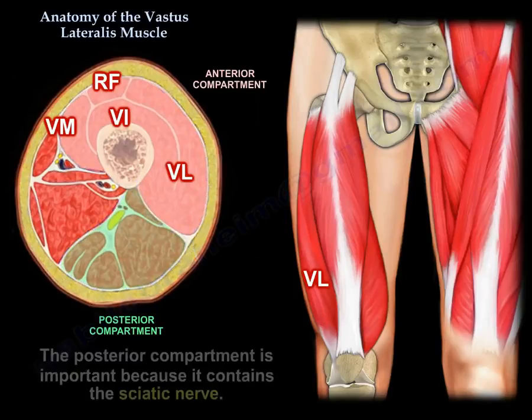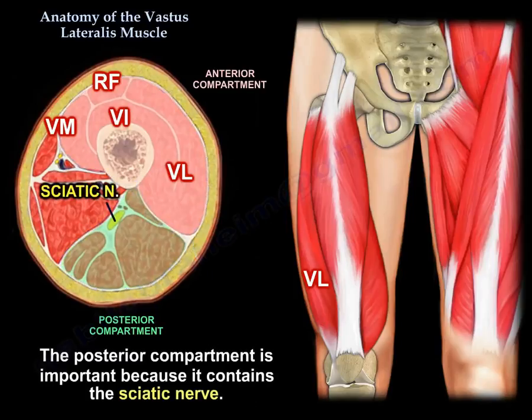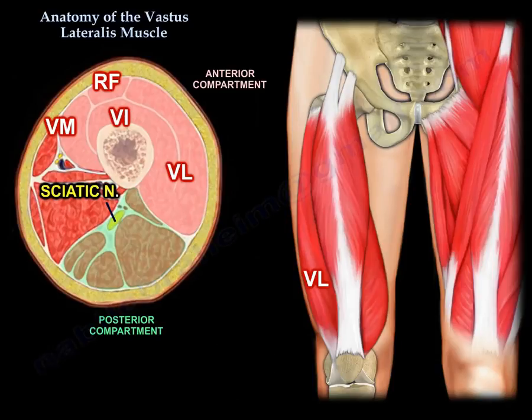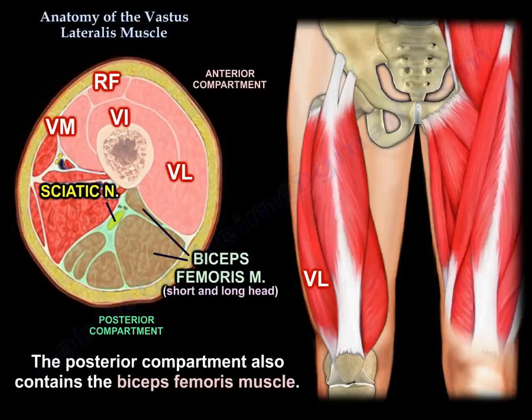The posterior compartment is important because it contains the sciatic nerve. It also contains the biceps femoris muscle.